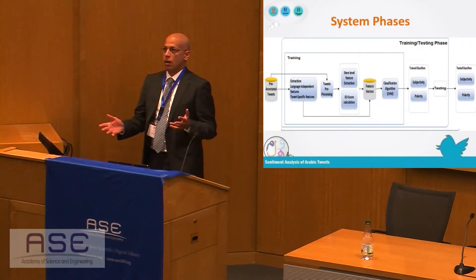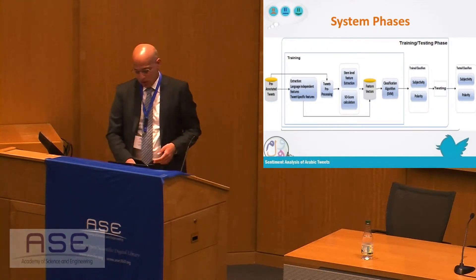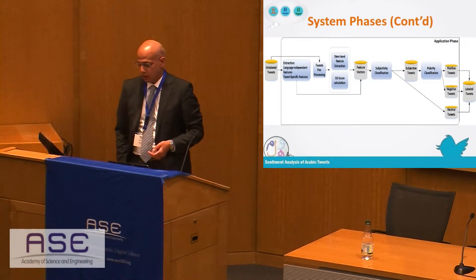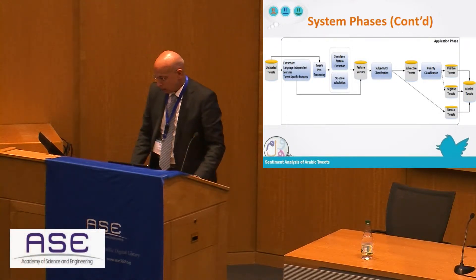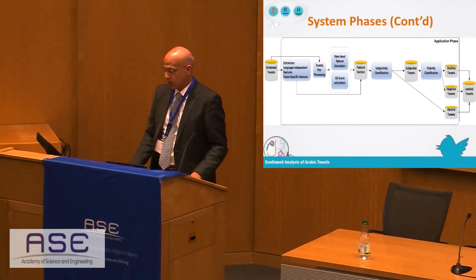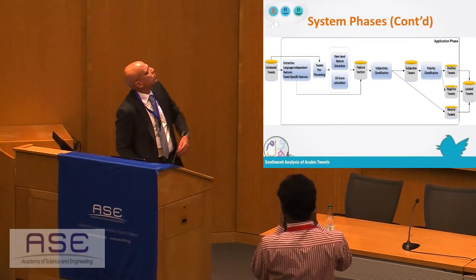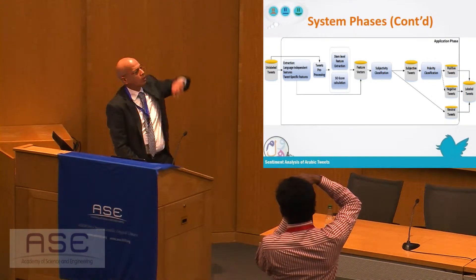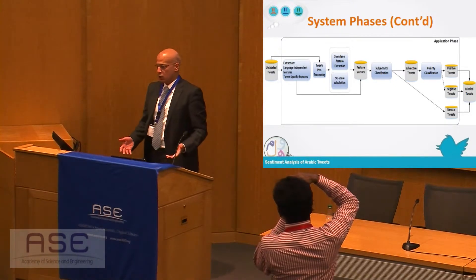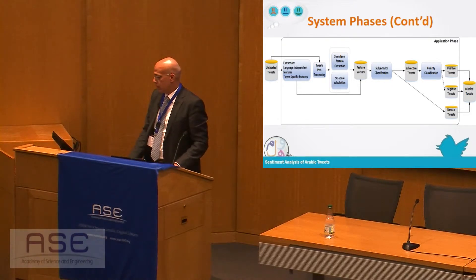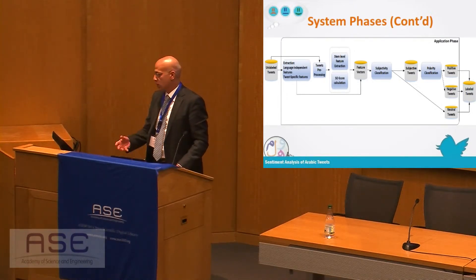Regarding system phases: in each hybrid or machine learning approach, you have a training and testing phase. Generally speaking, it is similar to the application phase, in which you have a set of unlabeled tweets. You have an extraction phase where language-independent and tweet-specific features are extracted, then feature vectors are gathered and fed into the system after preprocessing. You then have two classifications: first, subjectivity classification whose outcome is either subjective or objective (neutral) tweets, and if it is a subjective tweet, it passes through polarity classification to identify positive from negative tweets.